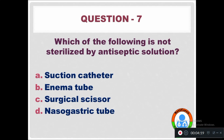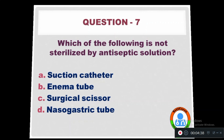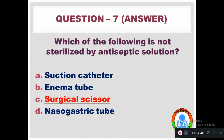Question 7: Which of the following is not sterilized by antiseptic solution? Option A: Suction catheter. Option B: Enema tube. Option C: Surgical scissor. Option D: Nasogastric tube. The right answer is Option C — surgical scissor is not sterilized by antiseptic solution.